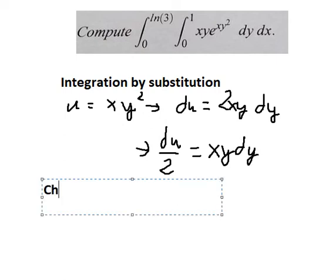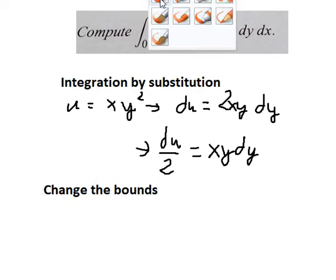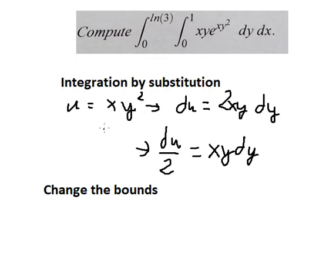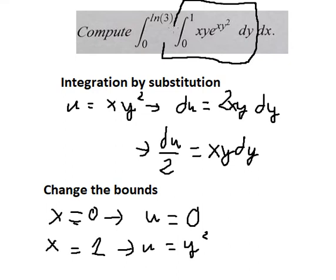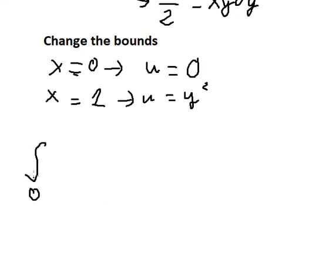Now we need to change the bounds. If s equals number 0, we put number 0 in here, and now we have u equals number 0. If s equals number 1, I will put number 1 in here, so u equals y squared. Now we need to change this integral: for number 0 we keep number 0 because u equals number 0; when s equals number 1 we change into y squared in here.